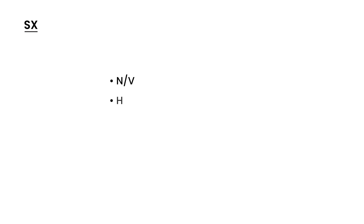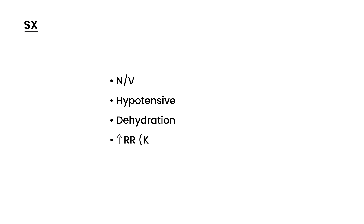What are the symptoms? The patient will be very sick, with nonspecific symptoms such as nausea and vomiting. The patient is in a state of volume depletion and dehydration, so you'll have low blood pressure. The body tries to remove the excess byproduct of ketones — acetone — by increasing the respiratory rate. There's a special name for this rapid, shallow breathing in DKA: Kussmaul respirations.